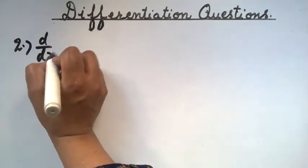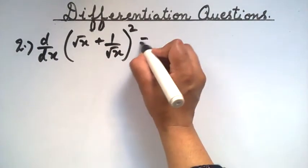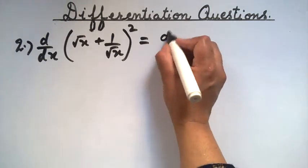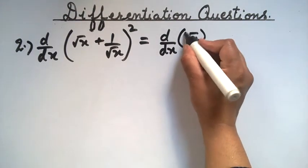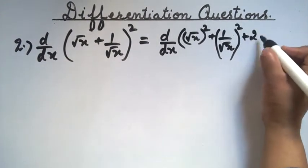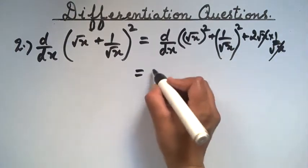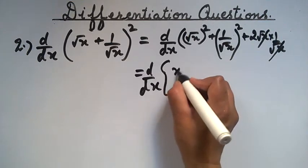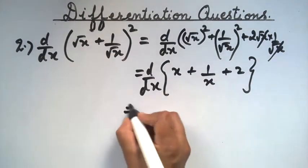The next problem is: find dy/dx of (√x + 1/√x) whole squared. We expand this as: √x squared plus 2 times √x times 1/√x plus (1/√x) squared, which simplifies to x + 2 + 1/x. Now differentiate each term individually.